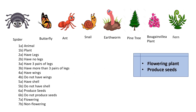Let's look at another example. Based on the keywords given, we are looking for a flowering plant that also produces seeds. We need to find an organism that is a plant, produces flowers, and also produces seeds. Let's go to the first question — you always start with the first question in the dichotomous key. The first question asks whether the organism is an animal or a plant. We know it is a plant, so we choose 1B.